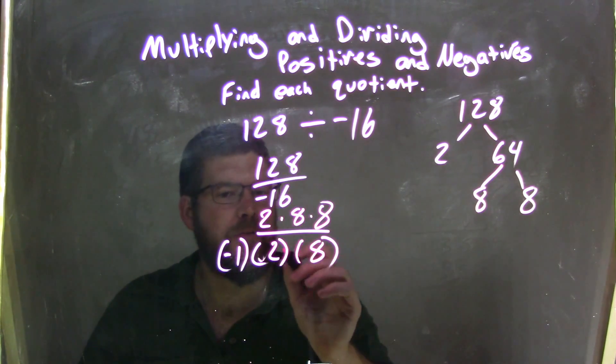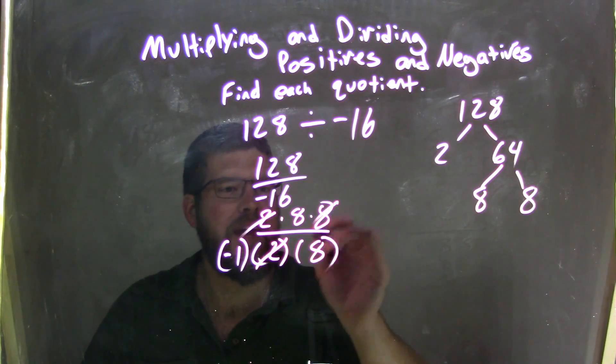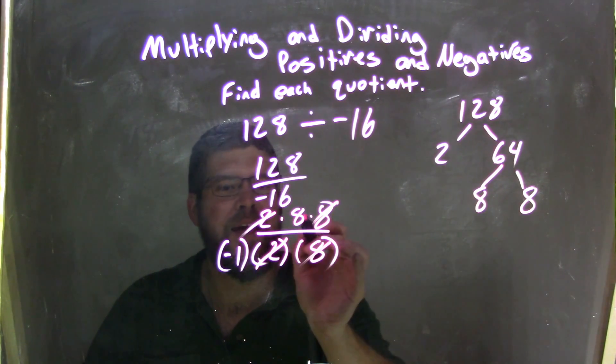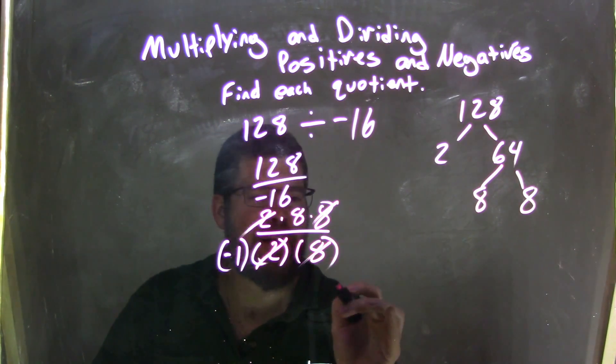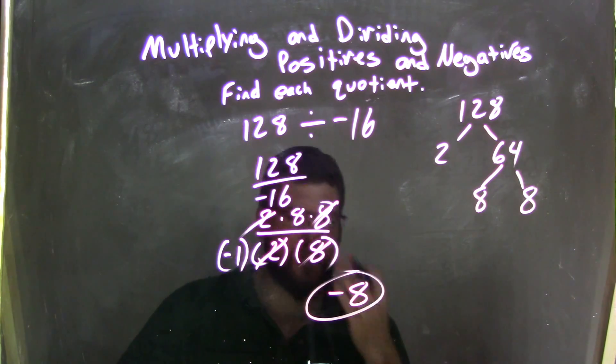Well, that's great for me because the 2 cancels here, the 8 cancels, now we're left with 8 divided by negative 1. 8 divided by negative 1 is negative 8, which is our final answer.